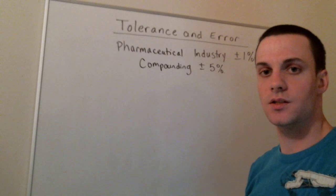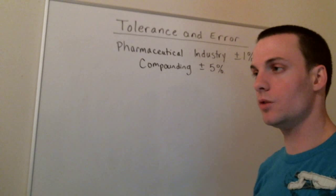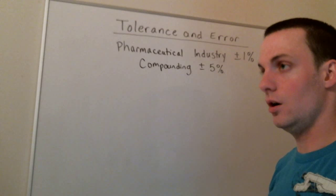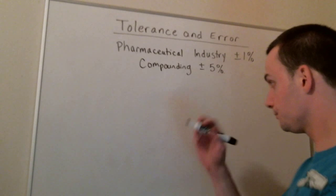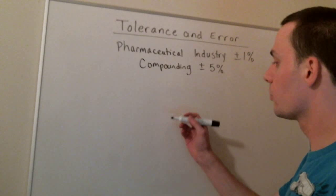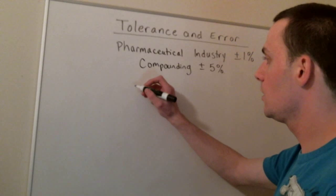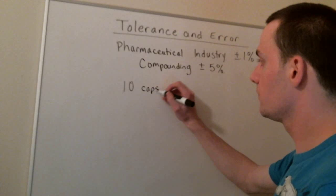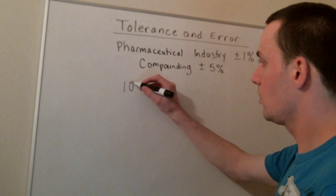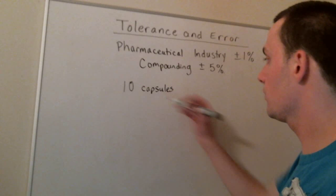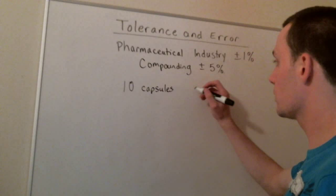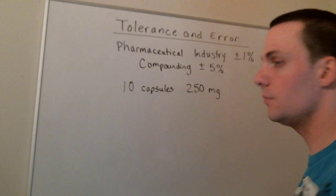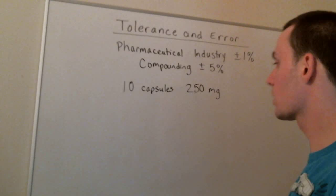Let's say that we're in a community setting and we need to make a compound for a certain prescription. We're going to make capsules and fill 10 capsules with a target of 250 milligrams of powder. It can be any drug that we're compounding.